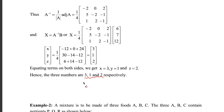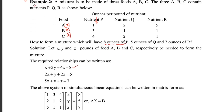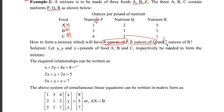Let us look at this problem. A problem may have three kinds of food A, B, C and three nutrients P, Q, R. The question is: to get eight ounces of P nutrient, five ounces of Q, and seven ounces of R nutrients, how to form a mixer by using three kinds of food A, B, C?